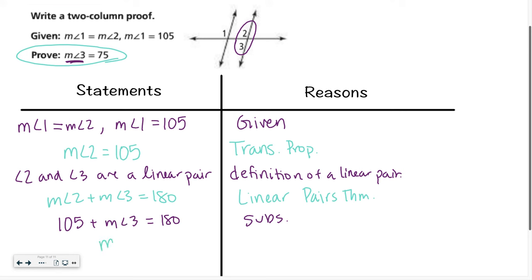Then I can subtract 105 from both sides and I'm left with the measure of angle 3 equals 75 — subtraction property. So: step 1, write the given. Step 2, try to use the given information to come up with another step. Step 3, look at a picture and see if there's any more given information from the picture. Then look at that proof statement — where are you trying to go, and how do you get there? I saw a linear pair from the picture, but my proof statement had numbers, so I had to change it from a verbal linear pair to having numbers, then swapped out things I'd already found to get to that final proof statement.